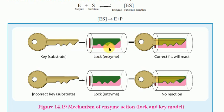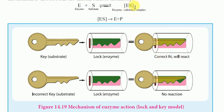If there is a particular enzyme, it acts like a lock. If there is a particular substrate, it acts like a key. If there is a correct fit between the lock and key, they will react, forming the enzyme-substrate complex, which then decomposes into the free enzyme plus product.